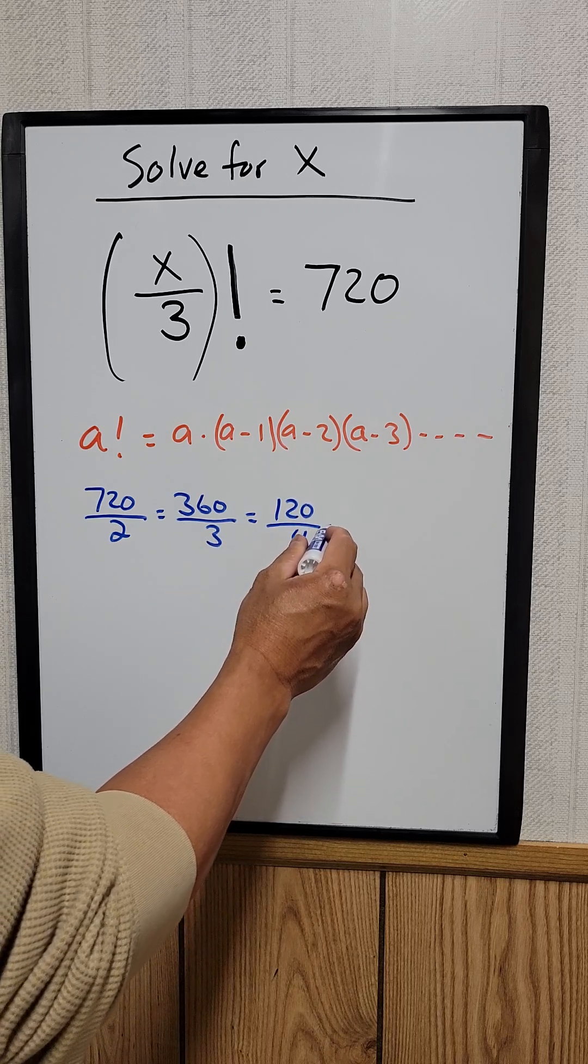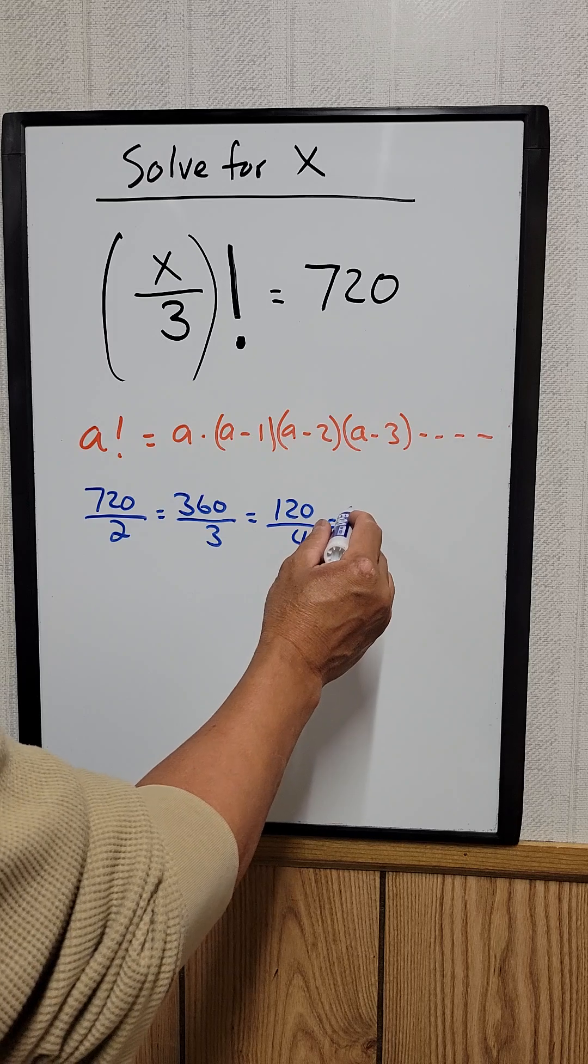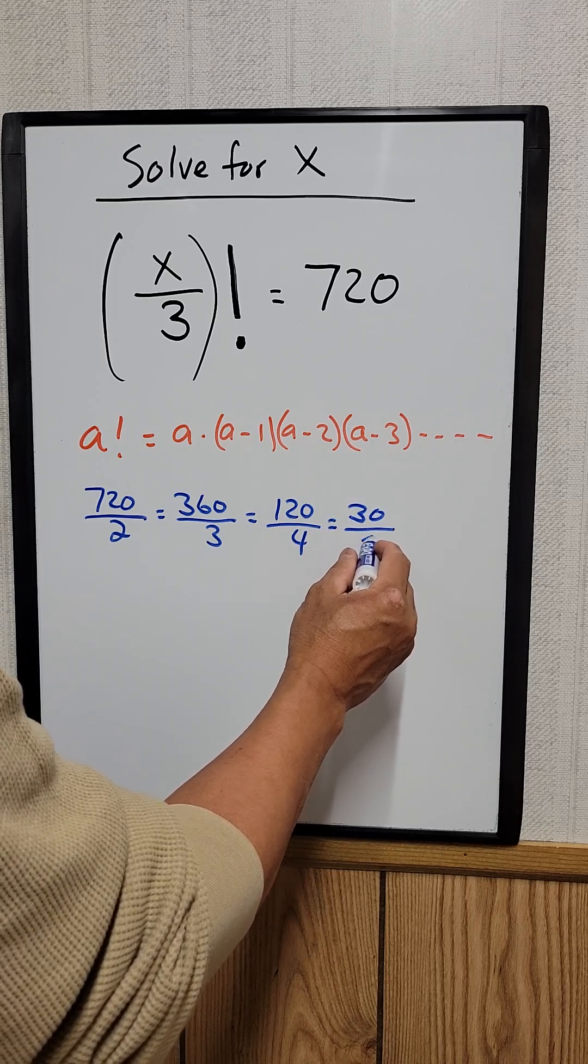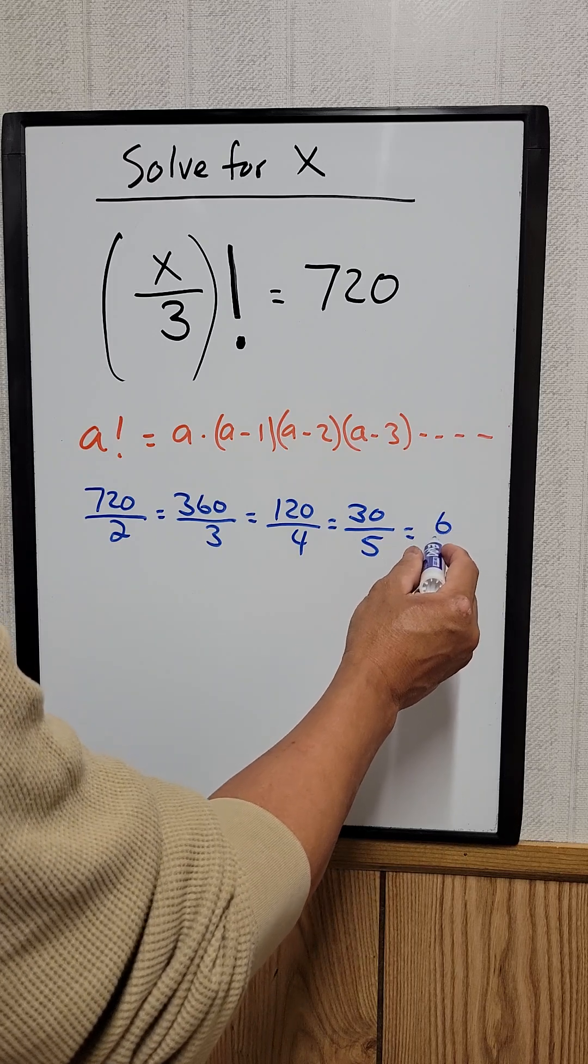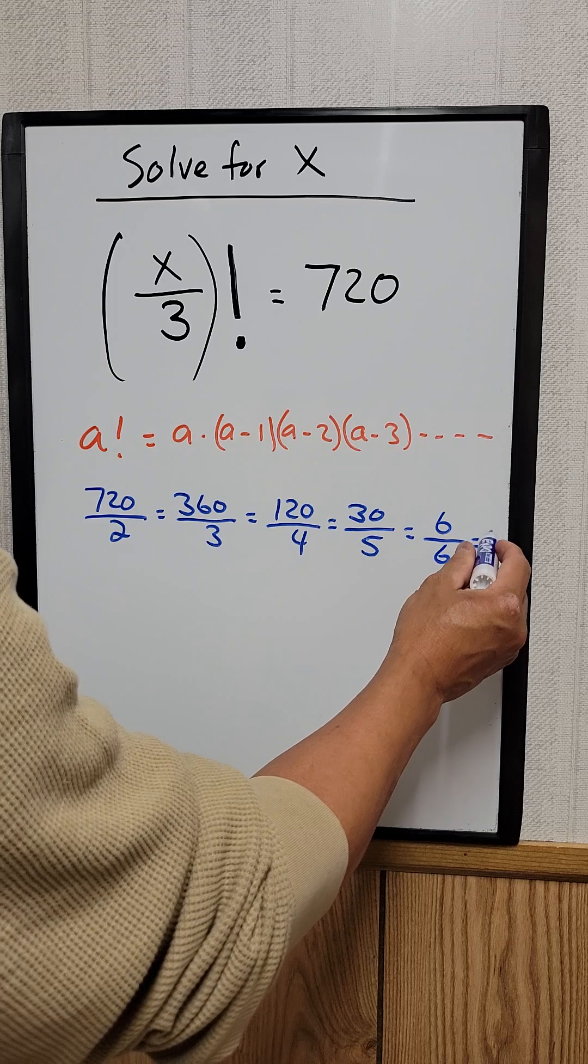And then divide by 4, which is equal to 30, and divide by 5, which is equal to 6, and if I divide by 6, which is equal to 1.